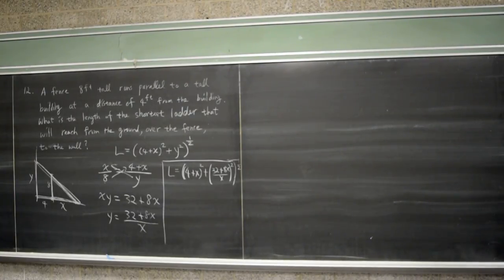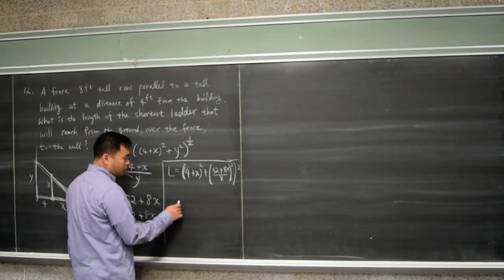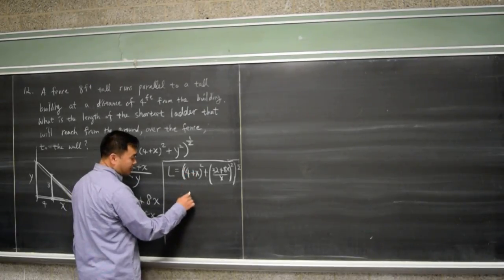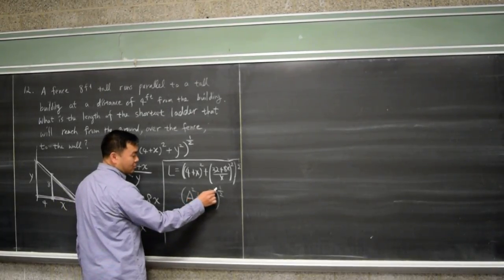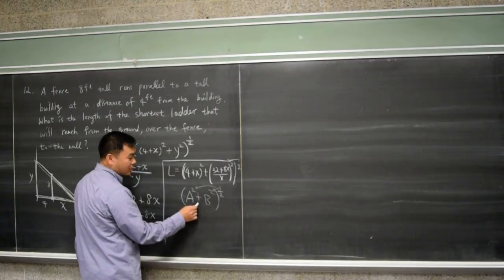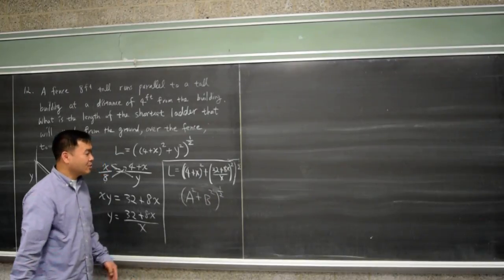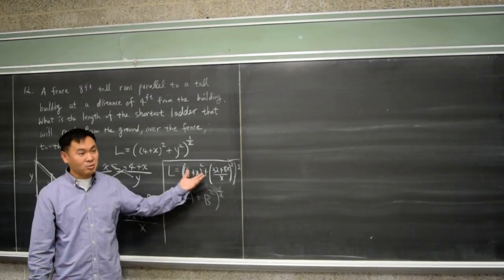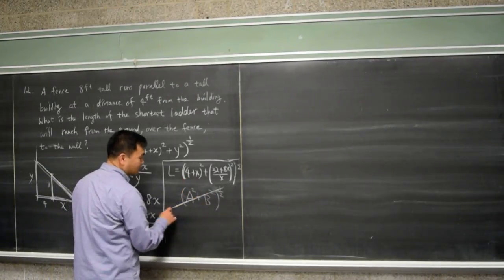A student asks whether we can distribute the one-half exponent inside. If you have something like (A + B)^(1/2), the question is whether you can distribute the one-half to each term inside — and the answer is no. You can only do that when the expression involves multiplication or division. If it's addition or subtraction, that algebra is not allowed. So unfortunately we can't simplify much further and will just have to differentiate directly.